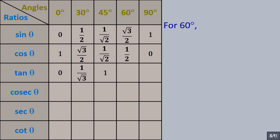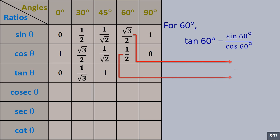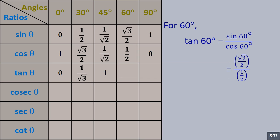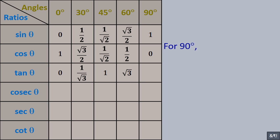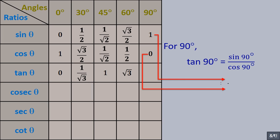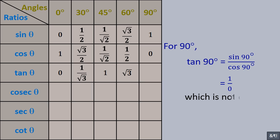For 60 degree, tan 60° = sin 60° / cos 60° = (√3/2) / (1/2) = √3. For 90 degree, cos 90° = 0, so tan 90° = 1/0, which is not defined.